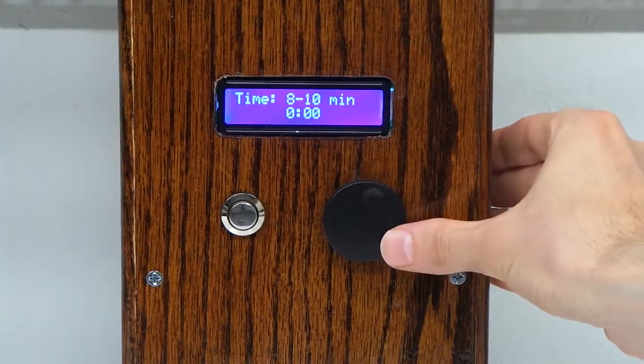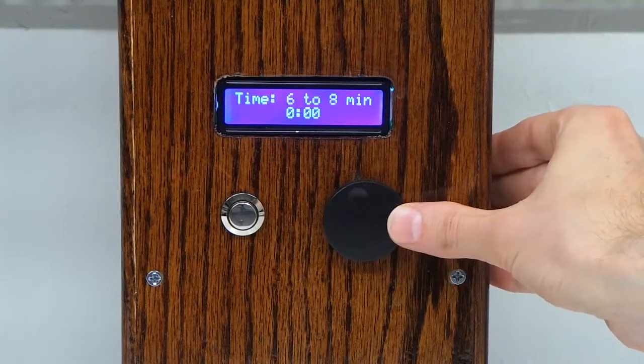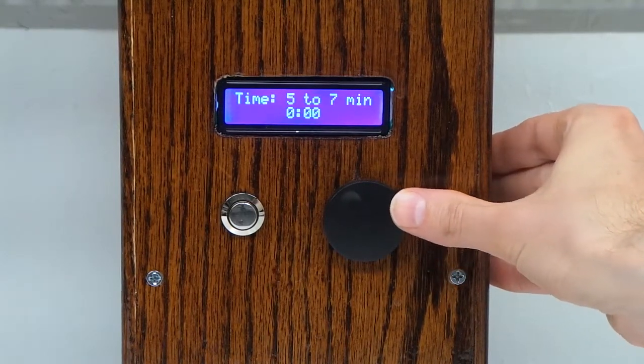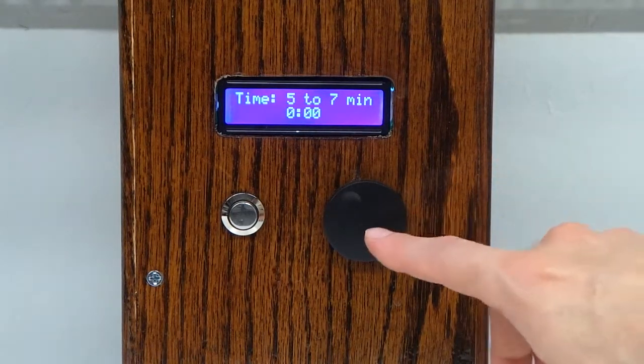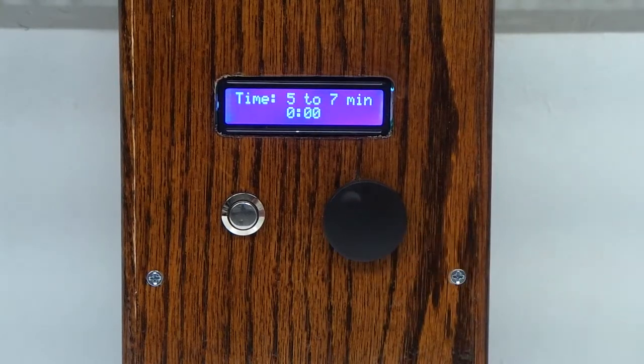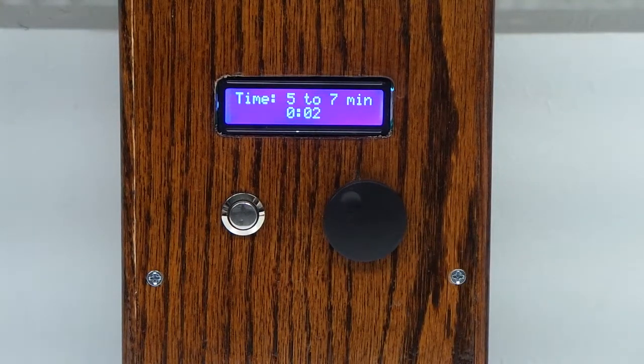To select the speech time, we turn this knob. Let's suppose that the speech is 5 to 7 minutes. When the speaker starts talking, we press the button, and then the timer will start.